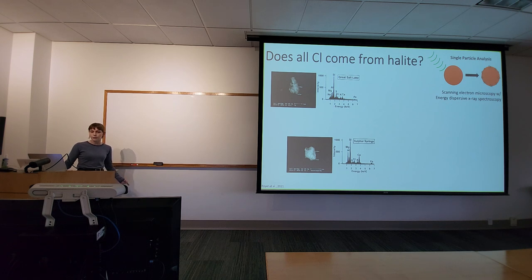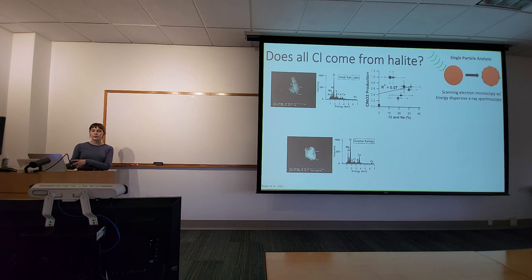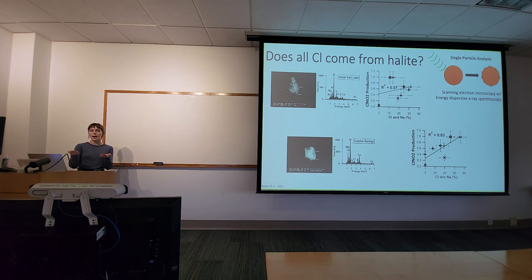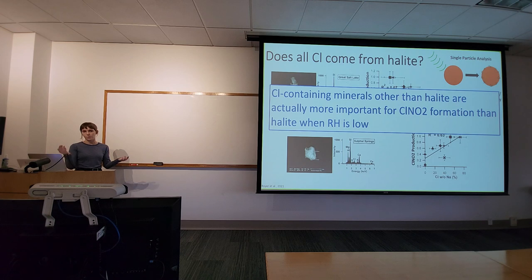When we plot ClNO2 production against particles containing both chlorine and sodium (assumed halite), we don't see a strong correlation. However, when we plot ClNO2 production against particles with chlorine but without sodium — assuming chlorine-containing minerals other than halite — we see a really strong correlation. This suggests that chlorine-containing minerals other than halite are actually more important for ClNO2 formation than halite, especially when relative humidity is low.